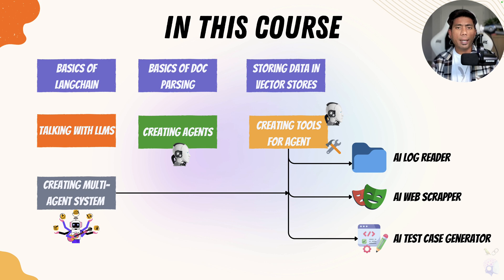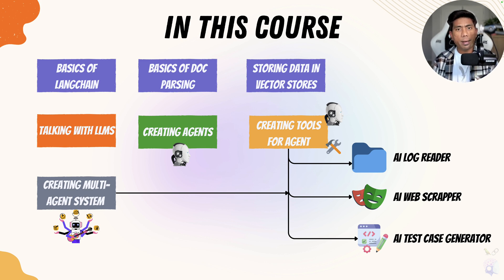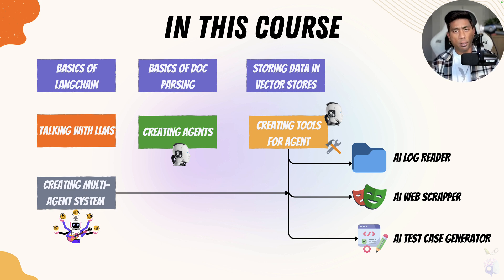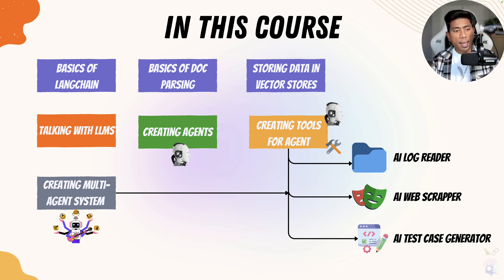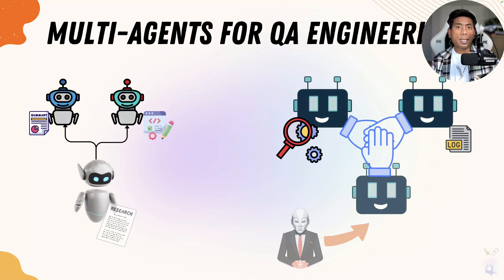We're not just going to create any tool like an addition or subtraction tool — we are actually going to build tools that make our life easier. These are POC code that you can take right from the course and use immediately on your machine. We are going to be building tools like an AI log reader, an AI web scraper using Playwright, and an AI test case generator in BDD format for given scenarios and requirements. Finally, we'll also be creating single-agent single-tool setups scaling up to multi-agent multiple-tool systems using AutoGen from Microsoft.